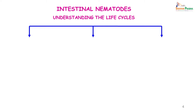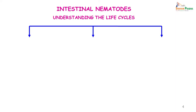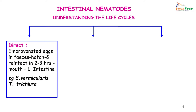Remembering the life cycles of all these worms is usually very complicated, so I have tried to break it down into a simpler form. There are worms which have a direct cycle — the embryonated eggs are passed in the feces, they hatch and reinfect within 2 to 3 hours through the mouth. These are the worms which usually lie in the large intestine. The two worms known to have a direct cycle are E. vermicularis and Trichuris trichiura. Basically they are ingested, passed through the intestine, eggs are laid, and the eggs are again ingested.